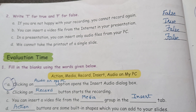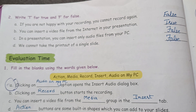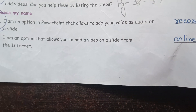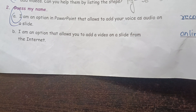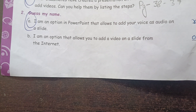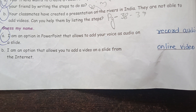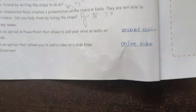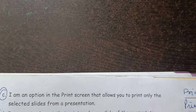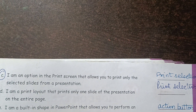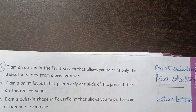Action buttons are some built-in shapes which you can add to your slides. Next is Guess My Name. I am an option in PowerPoint that allows you to add your voice as audio on the slide — Record Audio. I am an option that allows you to add a video on a slide from the internet — Online Video. I am an option in the print screen that allows you to print only the selected slides — Print Selection. I am a built-in shape in PowerPoint that allows you to perform an action on clicking me — Action Button.